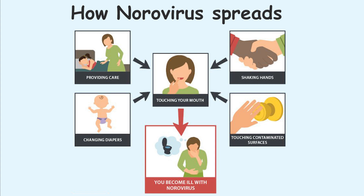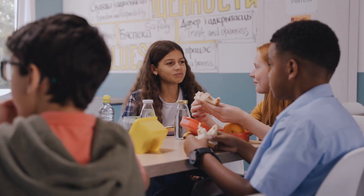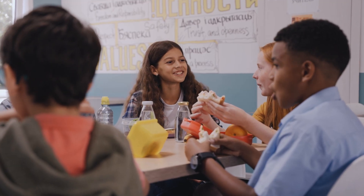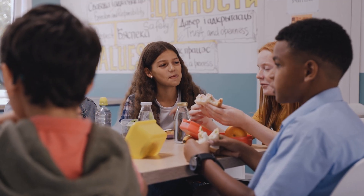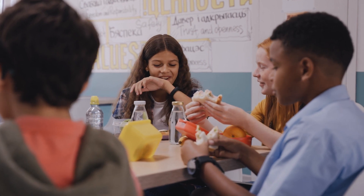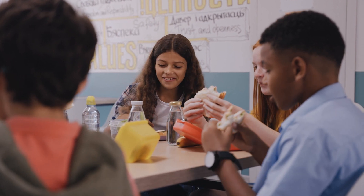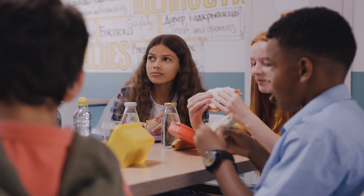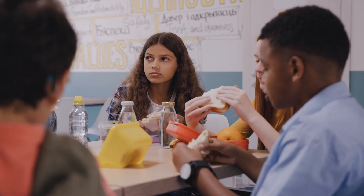This virus spreads very easily and quickly from person to person. It can spread through just a few particles on unclean surfaces, shared food, or close contact with an infected person. This is why outbreaks are common in places where lots of people gather, like schools, hospitals, and cruise ships.